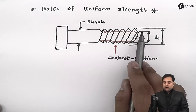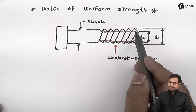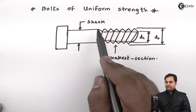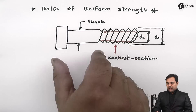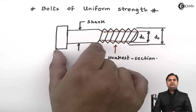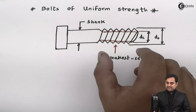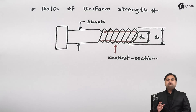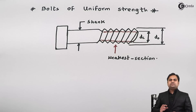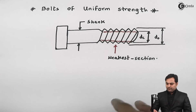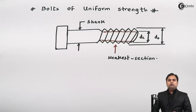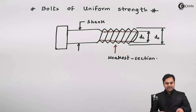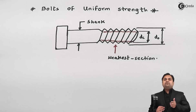If we need to avoid breaking of threads, we must address the fact that in the bolt, the shank is a stronger part whereas the threaded portion is weaker. The load distribution is non-uniform, and the stress distribution is also non-uniform — the threaded section will have more stress compared to the shank, which is the plain portion.